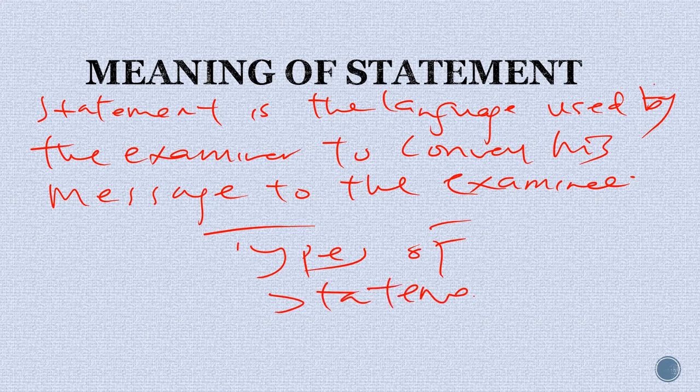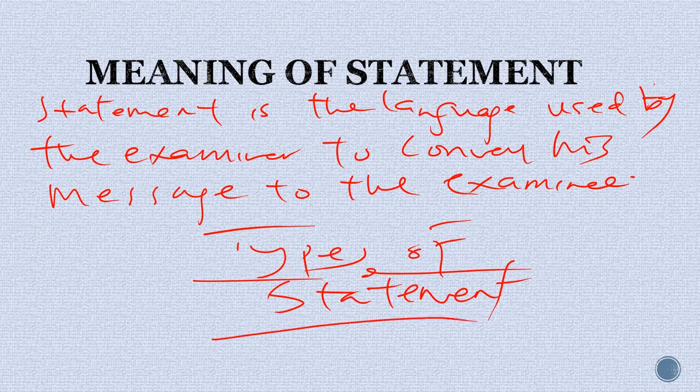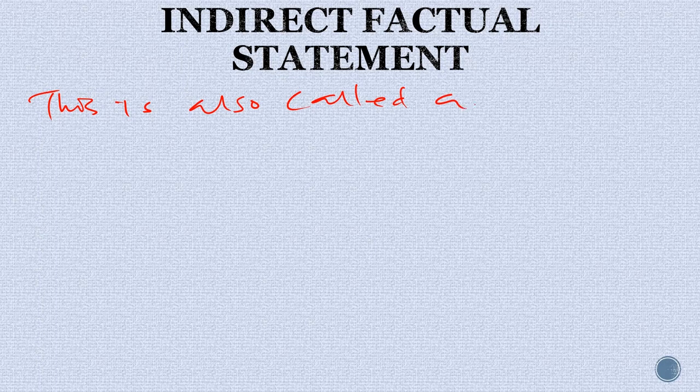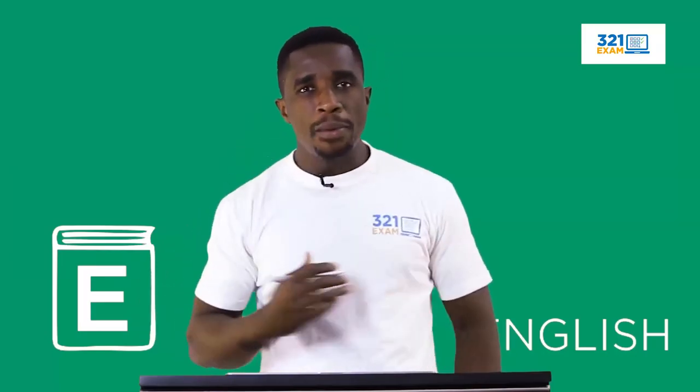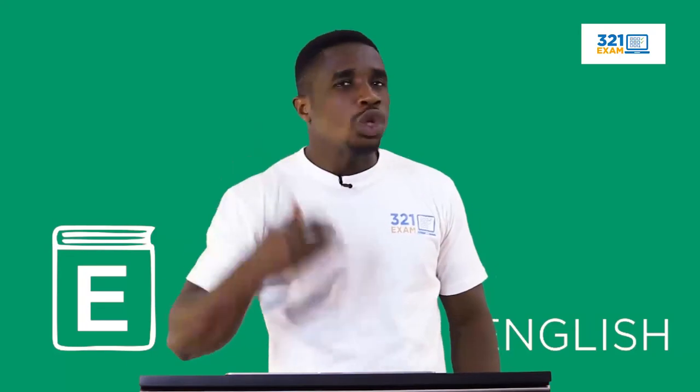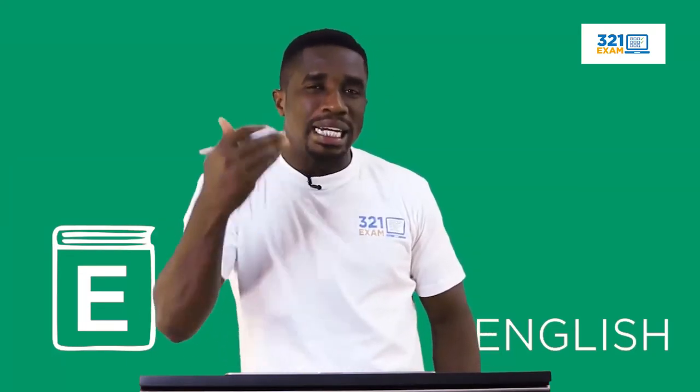We have about 10 types of statements to look at today. The first is the indirect factual statement, also called verbal irony in literature. Why? Because here a writer says a thing but means the opposite of what he has said. Once the writer says a thing and means the opposite of what he has said, that fact has been expressed in an indirect manner.